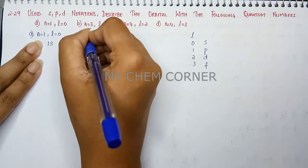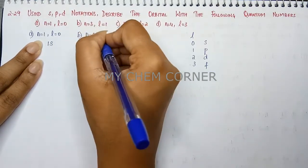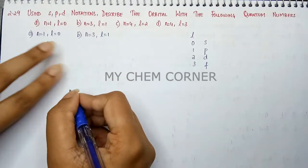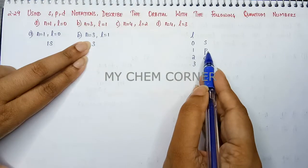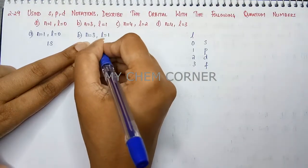In the second one, n is equal to 3 and l is equal to 1. So principal quantum number is 3 and when l is equal to 1 I have p orbital. So this is going to be 3p.